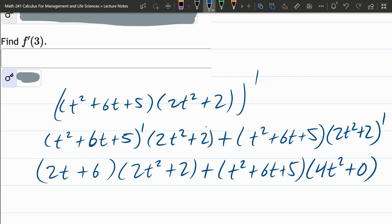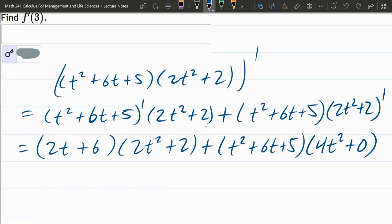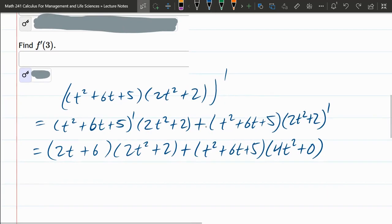We can just leave it like this. Totally fine. The plus zero, that's not needed. That could go away. But you could distribute this out and collect your like terms. Looks like the highest power here, you'll get a t to the fourth if you multiply it all out. But this is just fine to leave it like this. You don't need that plus zero.